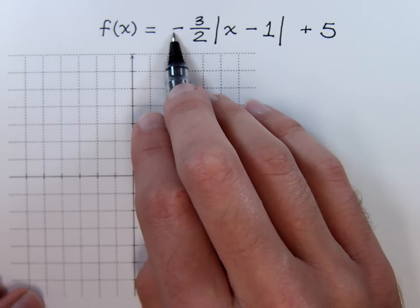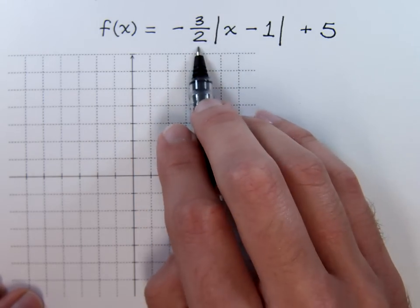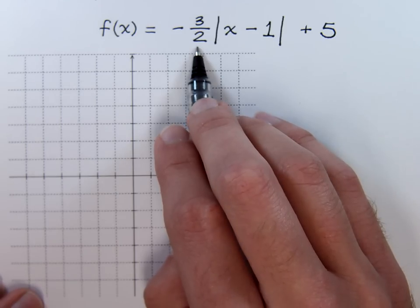This negative is going to turn our v-shape of the absolute value upside down. And the three halves is going to help us with the slope to tell us how steep our line is.